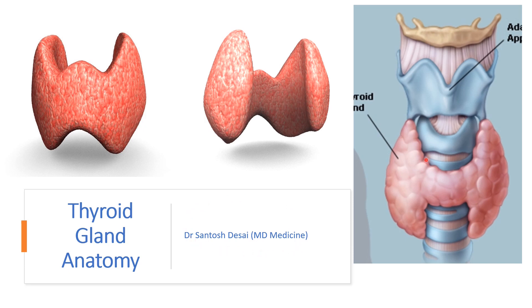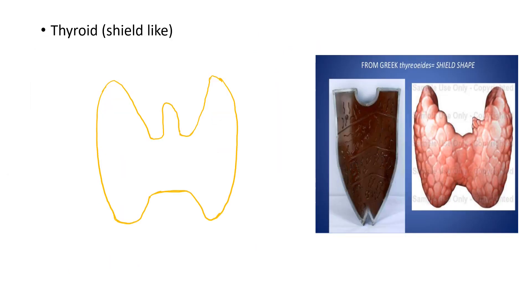As you can see, the thyroid gland is a shield-like structure. This is the anterior view of the thyroid gland and this is the posterior view. The word thyroid is derived from the Greek word 'thyreoides' which means shield-like structure, and if you see, the thyroid gland is actually a shield-like structure.